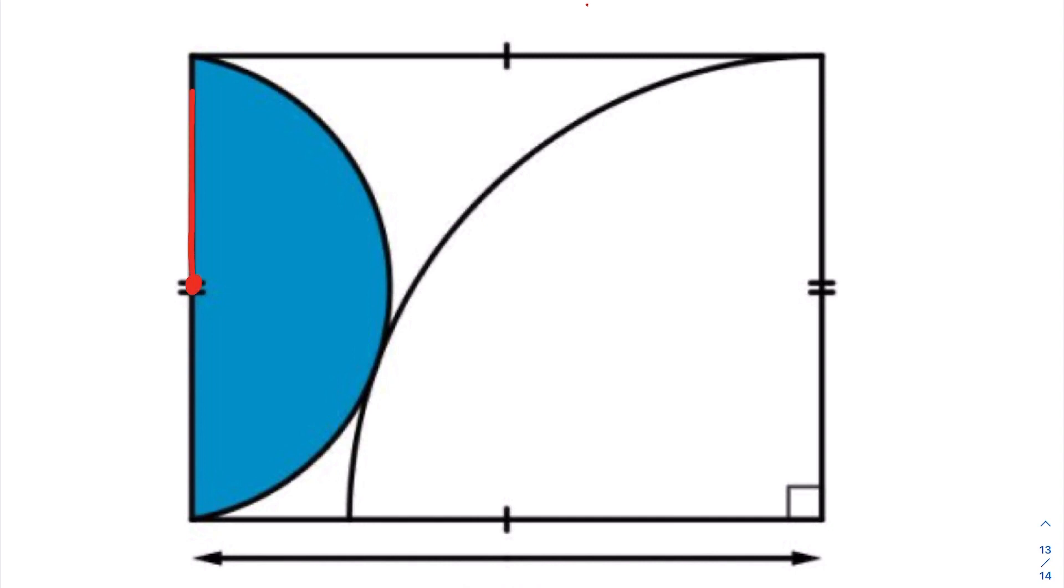I know that the radius of the circle, let's label that with an R, can label that from here to here. This would be R apiece. I'm assuming this is the center of our circle here. Therefore, the distance from here to here, we can label as 2R, and that is exactly the radius of this quarter circle.